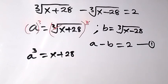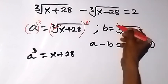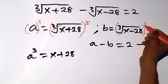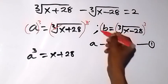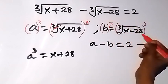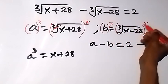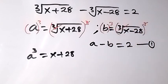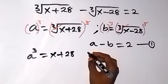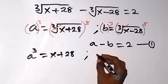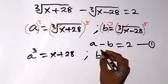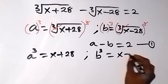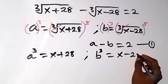Then we can also do that here. When we raise this side to power 3, we also raise b to power 3. And what we have — cube cancels cube root — and then we now have b raised to power 3 as well. It will be equal to x minus 28.